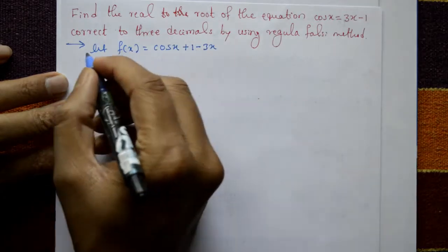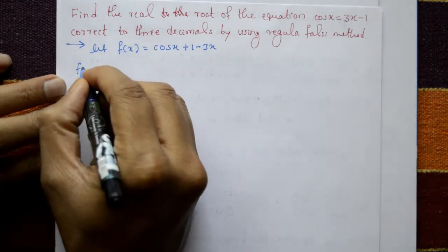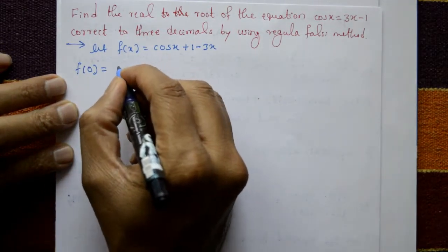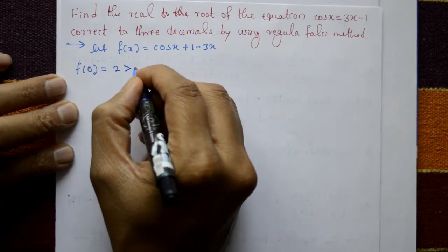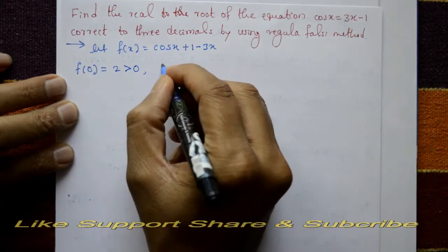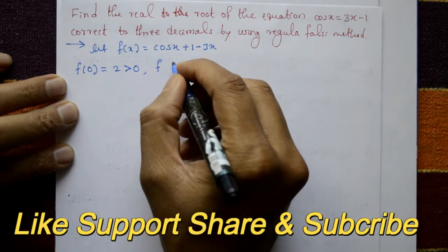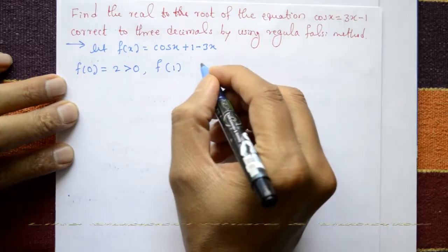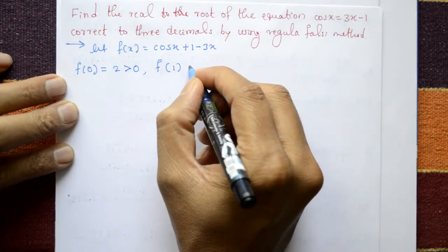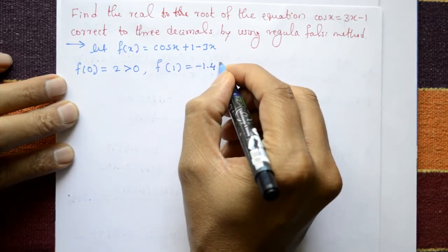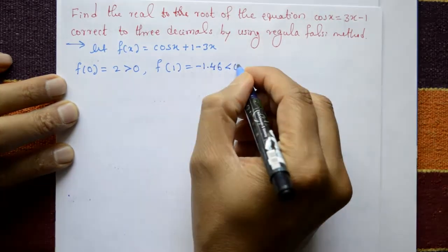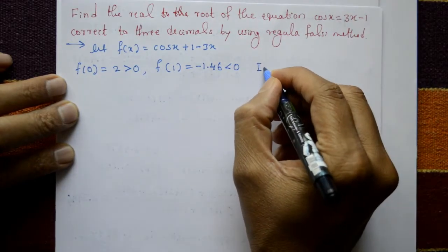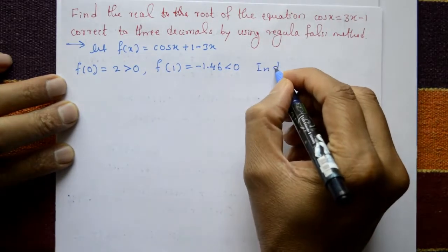Put x = 0: f(0) = 2, which is greater than 0. Put x = 1: f(1) = -1.46, which is less than 0. Using radian measure.